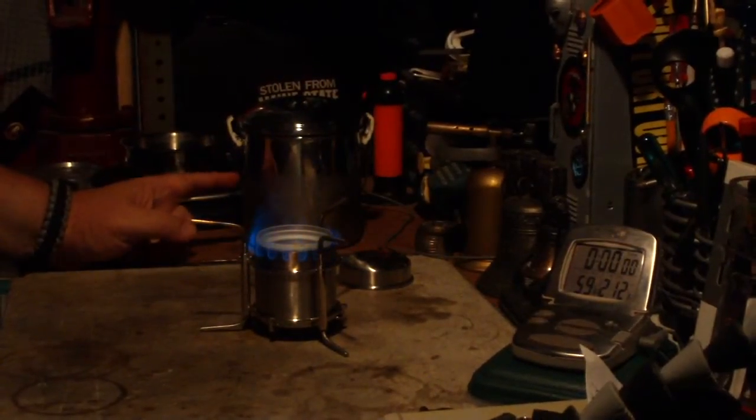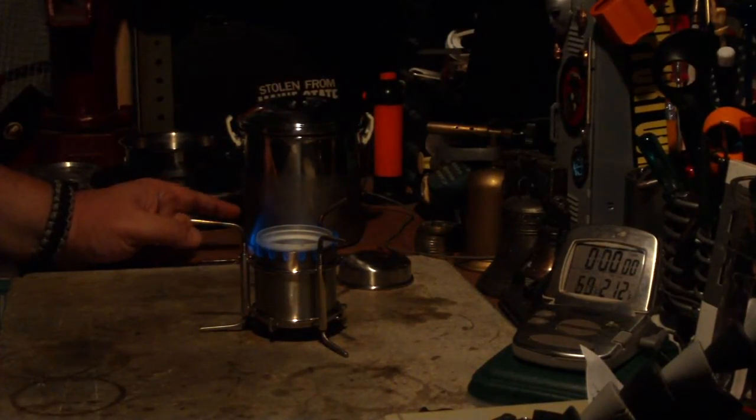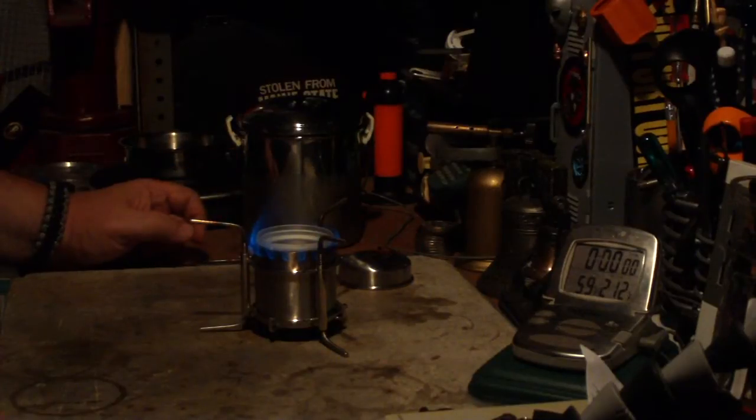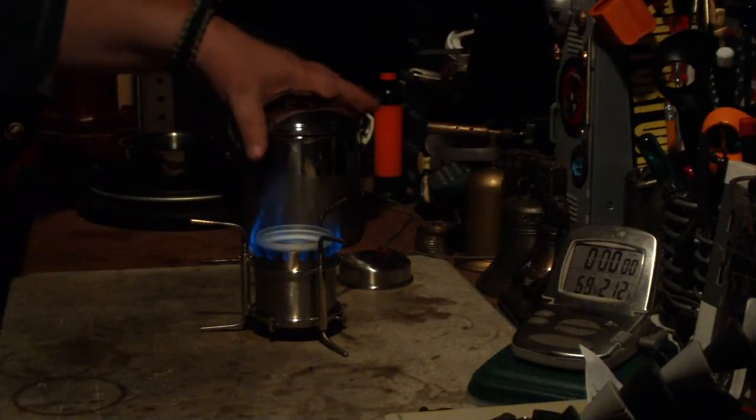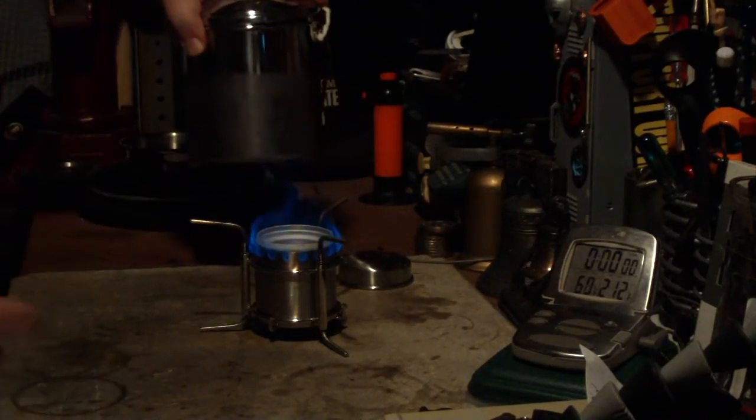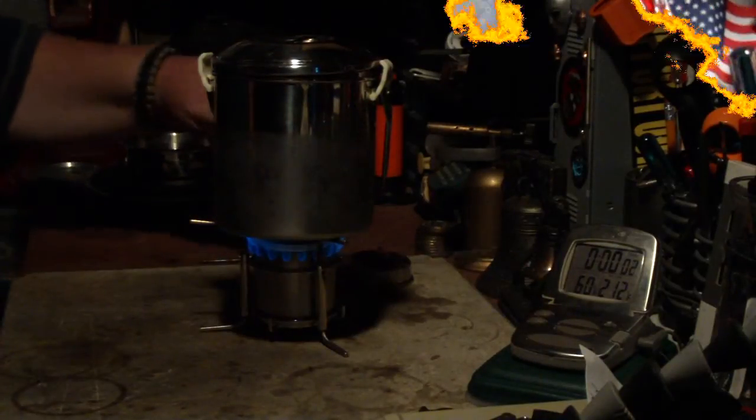Now this is the 12 centimeter zebra pot, which means the diameter is 12 centimeters, and it's 12 centimeters tall. That works out to about 4.72 inches. Okay, we got the blossom. Temperature of water is 60 degrees. And let's see where this goes.